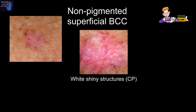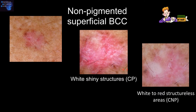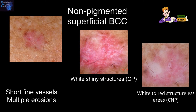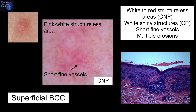Non-pigmented superficial basal cell carcinomas. The features we look for in the polarized mode are white shiny structures, and in the non-polarized mode, white to red structural areas. In addition, we also look for short fine vessels and multiple erosions. Here is an example of a superficial basal cell carcinoma showing the pink-white structureless area and the short fine vessels.